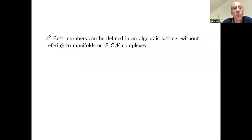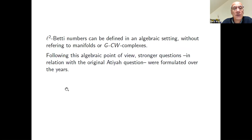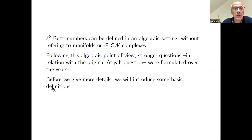Atiyah posed the following question, which is nowadays commonly known as the Atiyah conjecture, although he was not making a conjecture — it was just a question. He posed the question of whether it is possible to obtain irrational values of these L2-Betti numbers. We will follow a quite algebraic approach: L2-Betti numbers can be defined in an algebraic setting without referring to manifolds or CW complexes. Following this algebraic point of view, stronger questions in relation with the original Atiyah question were formulated over the years.